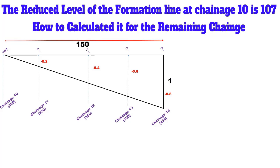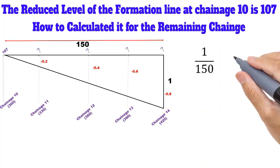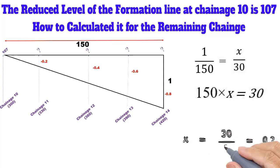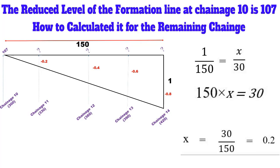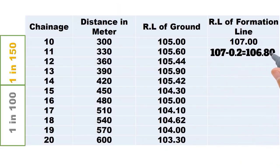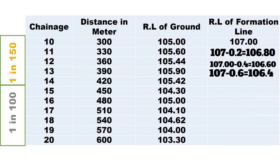Using similarity of triangles: height of big triangle divided by base of big triangle equals height of small triangle divided by base of small triangle. Putting in the values: 1 divided by 150 equals x divided by 30. By cross multiplication, 150x equals 30, so x equals 30 divided by 150, which gives x equal to 0.2 — meaning there will be 0.2 units down in 30 meters. You can verify: in 60 meters that will be 0.4 units down. So each preceding point will decrease 0.2 units from the previous point. Deduct 0.2 from 107 for chainage 11, 0.4 for chainage 12, 0.6 for chainage 13, and 0.8 for chainage 14 to get the reduced level of the formation line at each point.